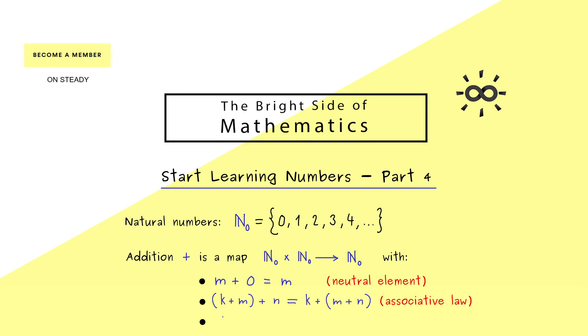There we use the mathematical induction to prove it and in a similar way we can prove the third property. And it tells us that in fact we are allowed to change the order. Now something like this we always call the commutative law.